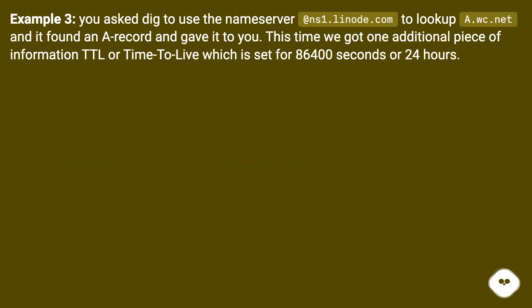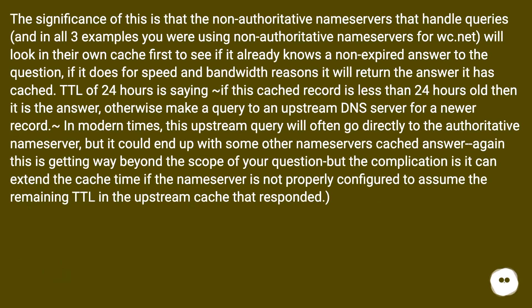Example 3: You asked dig to use the nameserver at ns1.linode.com to look up a.wc.net, and it found an A record and gave it to you. This time we got one additional piece of information — TTL, or time to live — which is set for 86,400 seconds, or 24 hours. The significance of this is that non-authoritative nameservers that handle queries will look in their own cache first to see if they already have a non-expired answer. If they do, for speed and bandwidth reasons, they will return the cached answer. A TTL of 24 hours means if this cached record is less than 24 hours old, it is the answer.